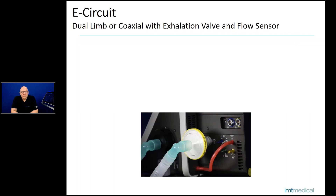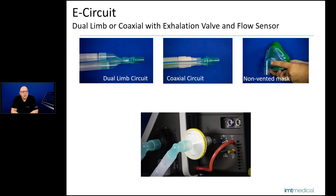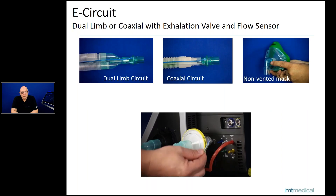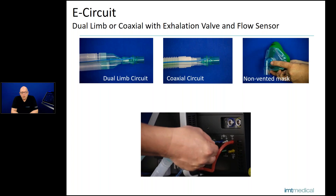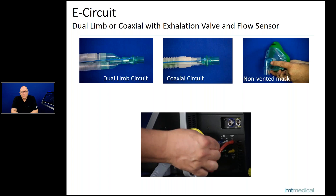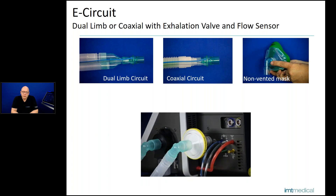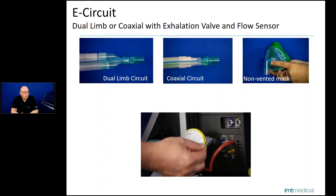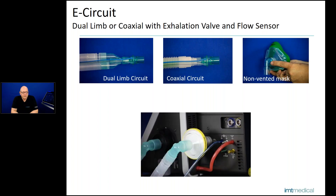Last but not least is the E circuit, which can be a dual-limb circuit or a coaxial circuit, can be used with a non-vented mask, has a flow sensor, and is connected to the expiration valve and inspiration side. This is the circuit most of you use, because it offers the most possibilities to ventilate your patient.